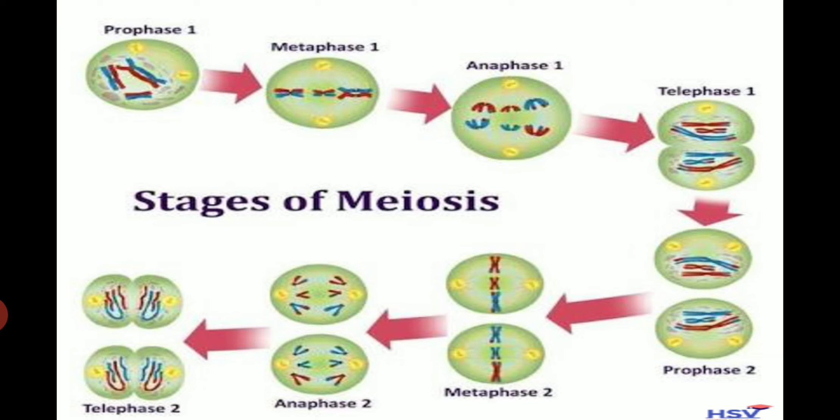In metaphase one, the chromosomes align themselves in the middle of the cell. In anaphase one, the spindle fibers pull the chromosomes apart to opposite ends. In telophase one, the cell pinches apart in the middle and the nuclear membrane reforms around the two new daughter cells. That's the end of meiosis one.